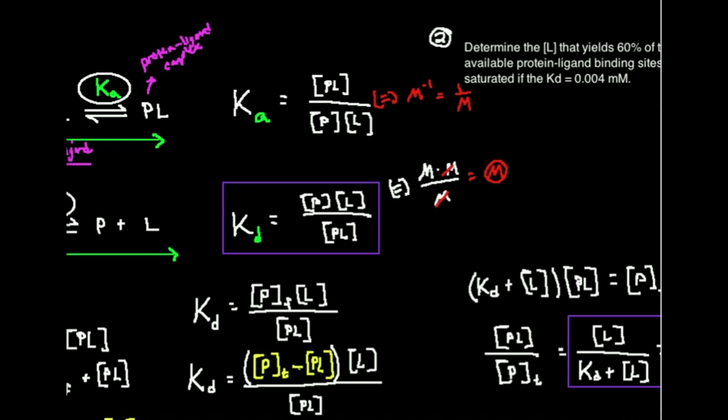So that's also very important. But it turns out that K_D is typically what's used because we don't really like to use inverse molar very much. We would very much like molar.